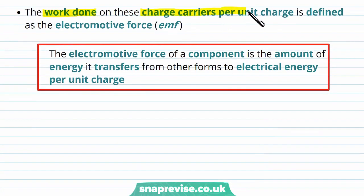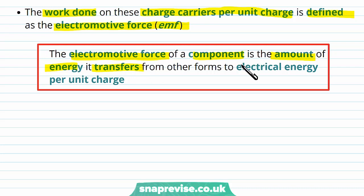The work done on these charge carriers per unit charge is defined as the electromotive force, EMF. The electromotive force of a component is the amount of energy it transfers from other forms to electrical energy per unit charge. We need to be very careful here — even though EMF is called electromotive force, it's not actually a force. It's the electrical energy per unit charge that the charge carriers passing through the component obtain — it's energy per unit charge, not a force.